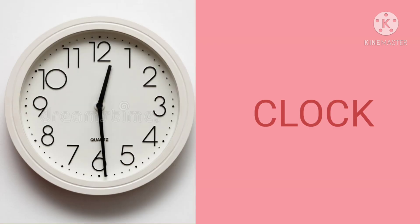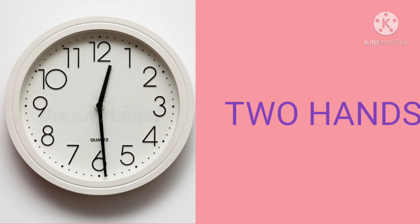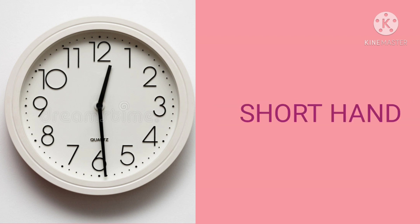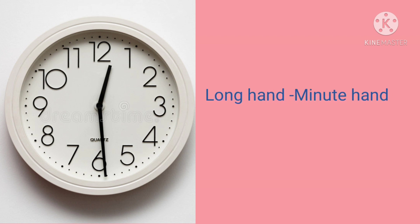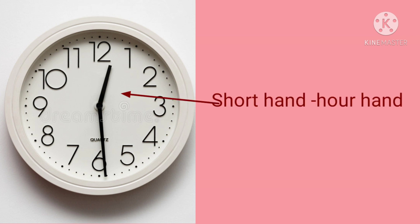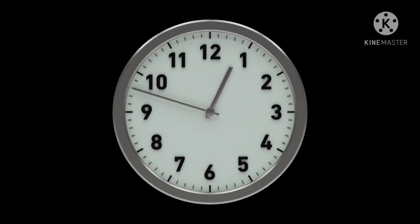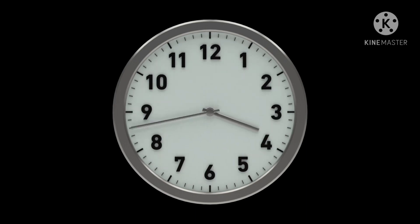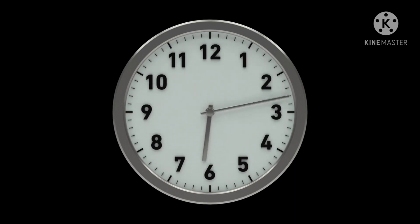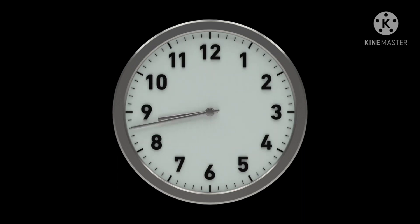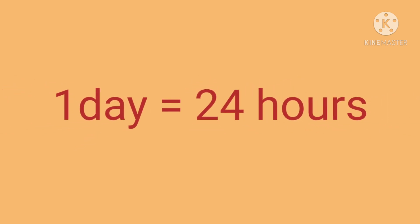Clock Time. A clock tells us the time. It has 12 numbers on its face and 2 hands — the long hand and the short hand. The long hand is called the minute hand and the short hand is called the hour hand. When the hour hand moves from one number to the next number, the time passed is one hour. The hour hand takes one hour to go from one number to the next number. The minute hand takes one hour to go around the clock face once. And so, one day is equal to 24 hours.